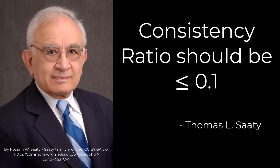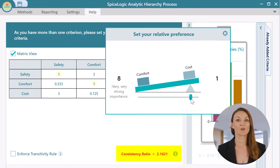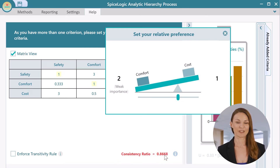Consistency ratio measures such inconsistency — the higher this number, the more inconsistent you are. According to Thomas L. Saaty, the consistency ratio should be less than or equal to 0.1. If your consistency ratio exceeds 0.1, it is necessary to rethink your judgments.